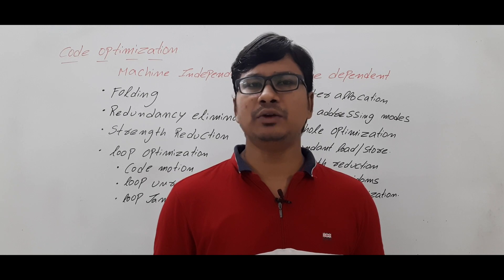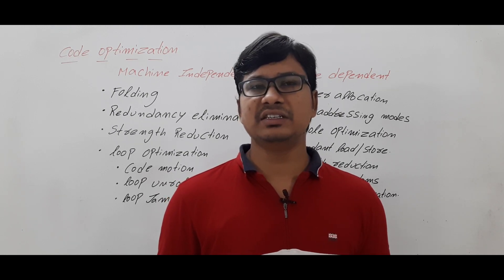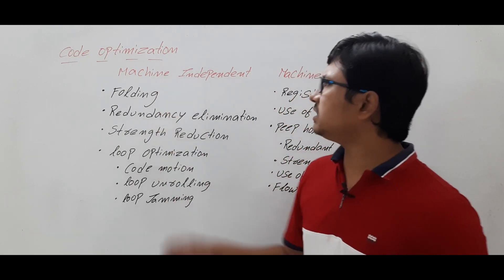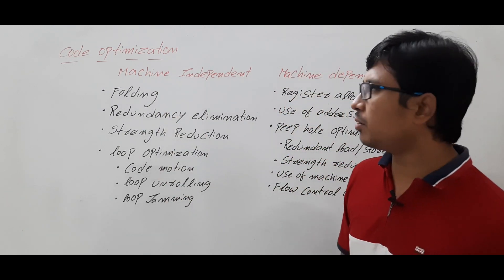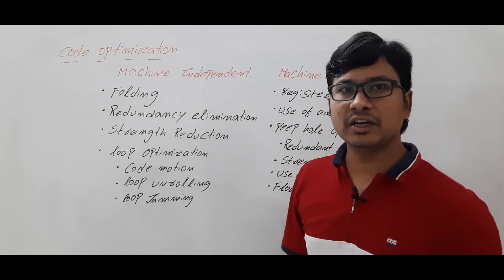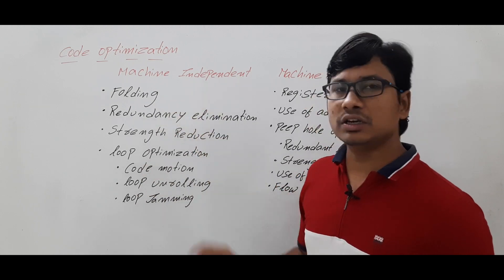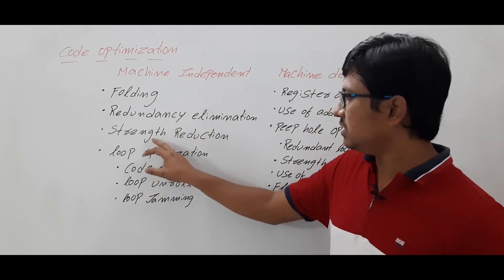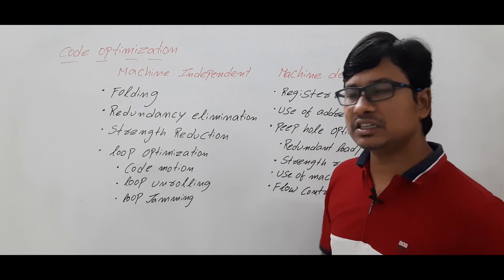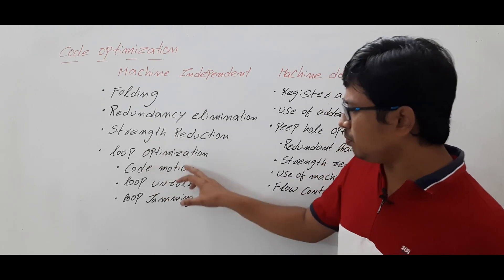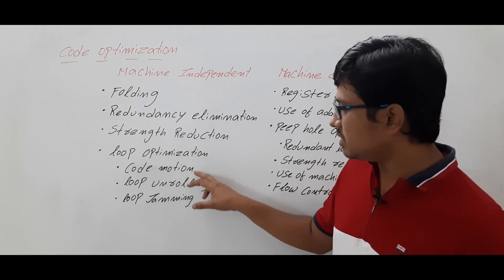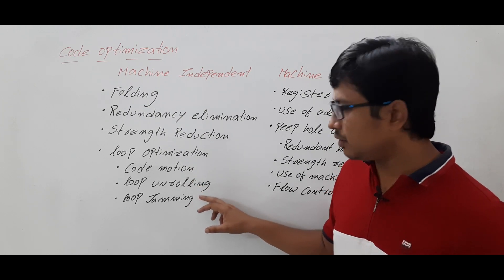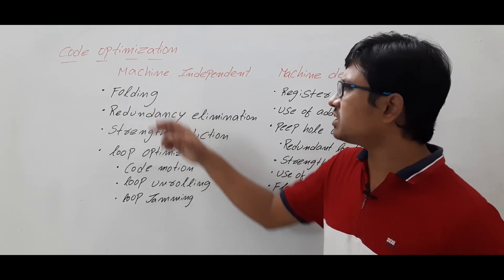In machine-independent code optimization we have a technique called folding or constant propagation, then we have redundancy elimination, strength reduction, and loop optimization. In loop optimization we have subclasses such as code motion, loop unrolling, and loop jamming.